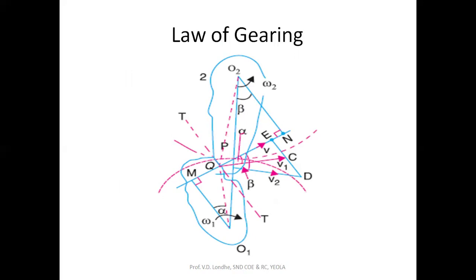When a gear pair is in contact with each other, their pitch circles meet at one common point — that point is called the pitch point. This is the pitch circle for the second gear and this is the pitch circle for the first gear, and they meet at the pitch point.